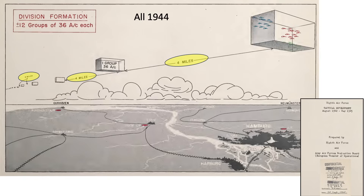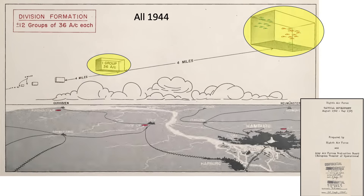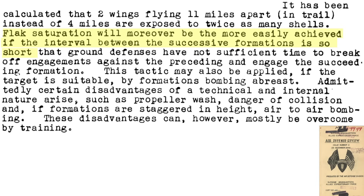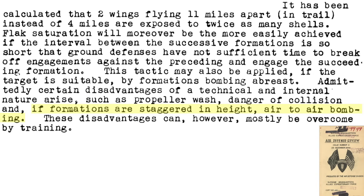This is one reason why the 8th Air Force's formation trail distances dropped from 6 miles in 1943 to 4 miles in 1944. The formation size also decreased from the unwieldy 54-aircraft combat wing to the manageable 36-aircraft group. Ground flak guns will not be able to engage follow-on formations due to the new target transition time required. The disadvantages of tight trail include prop wash hazard, increased susceptibility to mid-air collisions, and air-to-air bombing. These issues can be mitigated with training.